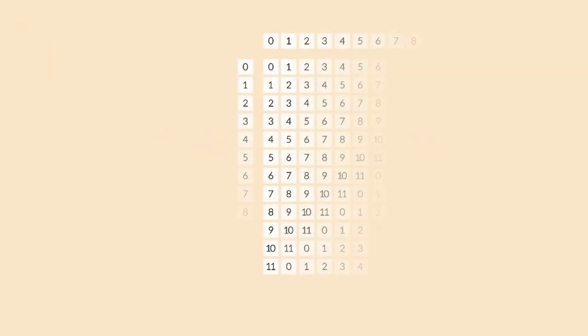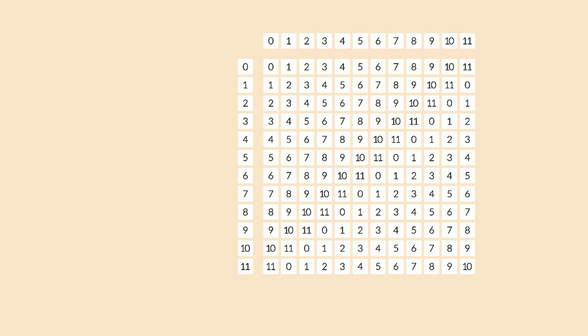When the operation of a group commutes, its Cayley table is symmetric along the main diagonal. That's because when you swap the order of the two inputs, you swap their row and column index in the table. Groups with a commutative operation are often called abelian. Some groups are abelian, others are not.